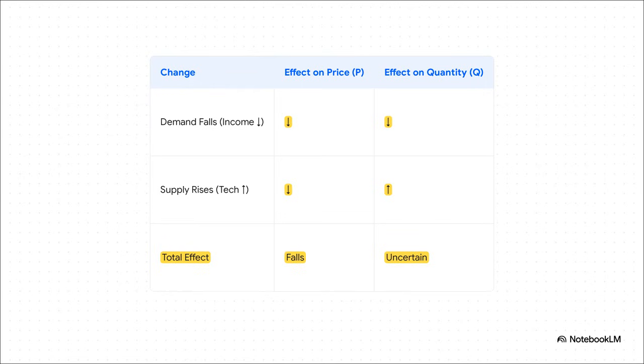Okay, let's walk through this together. Look at that first row. Falling demand. We saw it pushes price down and quantity down. Got it? Now the second row, that rising supply from the new tech, it also pushes price down, but it pushes quantity up.